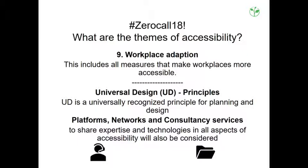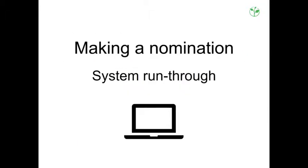The fifth theme is workplace adaptation — how to make it possible for people with disabilities to get to and perform tasks at their workplace, what physical barriers need to be removed, and how they can be integrated. We are also looking for universal design principles and the application of platforms, networks and consultancy services. Those are the nine topics for which we are looking for nominations.